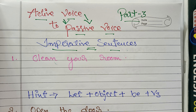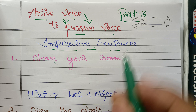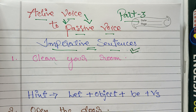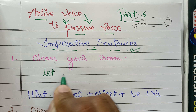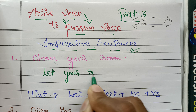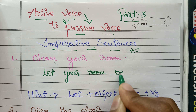The first example is: 'Clean your room.' So till now it has been very easy because subject becomes object and object becomes subject, and always remember in the passive voice we use V3. But imperative sentences will be something different. The answer: 'Let your room be cleaned.'